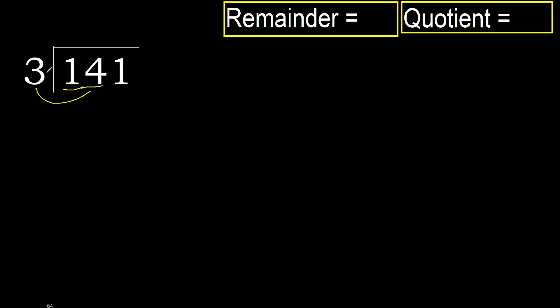3 multiplied by which number is nearest to 14 but not greater? 3 multiplied by 5 is 15, which is greater. 3 multiplied by 4 is 12, which is not greater. OK, subtract — remainder is 2. Next.